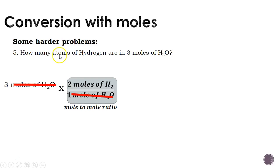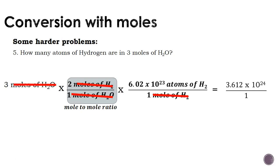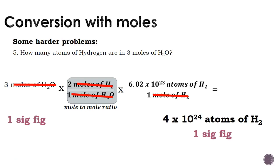We want our answer to be in atoms of hydrogen, so we use Avogadro's number: for every 1 mole of H₂ (hydrogen), we have 6.02 times 10 to the 23rd atoms of hydrogen. Moles of hydrogen cancel, and our answer is now in atoms of hydrogen — which is what we want. We need 1 sig fig, so our final answer is 4 times 10 to the 24th atoms of hydrogen.